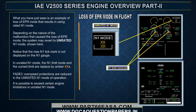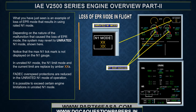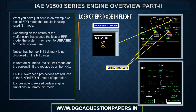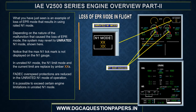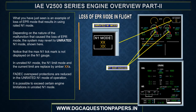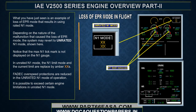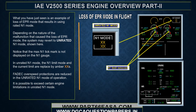Depending on the nature of the malfunction, the system may revert to unrated N1 mode. In unrated N1 mode, the max N1 tick mark is not displayed on the N1 gauge, and the N1 limit mode and current limit are replaced by amber Xs. FADEC overspeed protections are reduced in unrated N1 mode, and it is possible to exceed certain engine limitations.